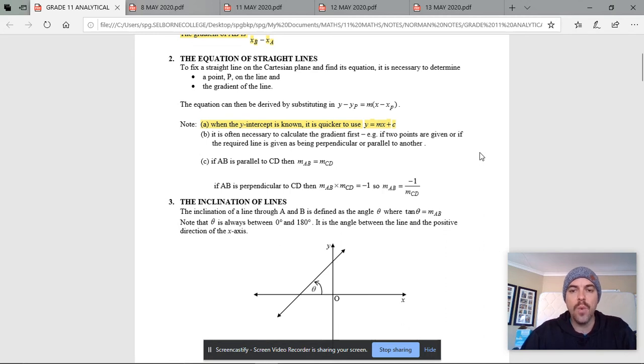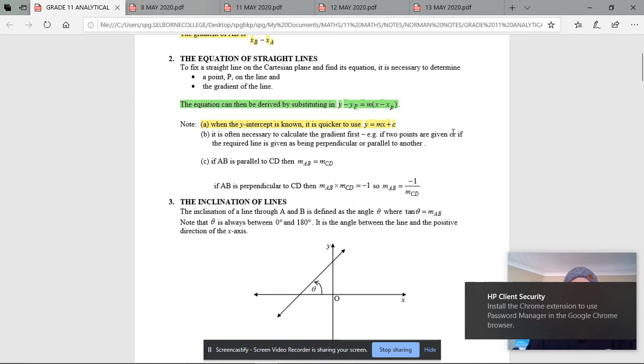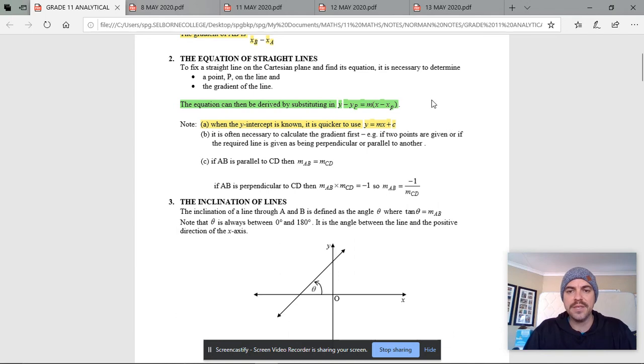If we want to find the y-intercept, maybe it's not given to us, you could if you know your m, your gradient, sub in a point into this formula. There isn't a new formula here that I'm highlighting now in green that says y minus y_p equals m times x minus x_p. So this formula will be the same as this one when we sub in a value to find the c.